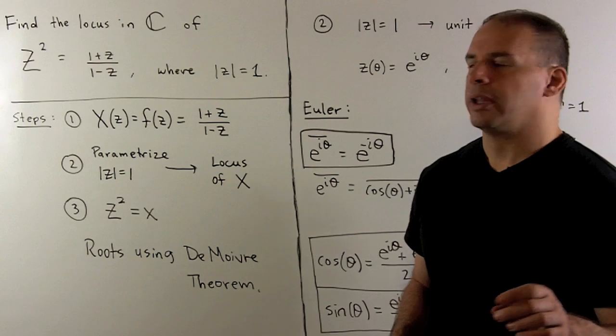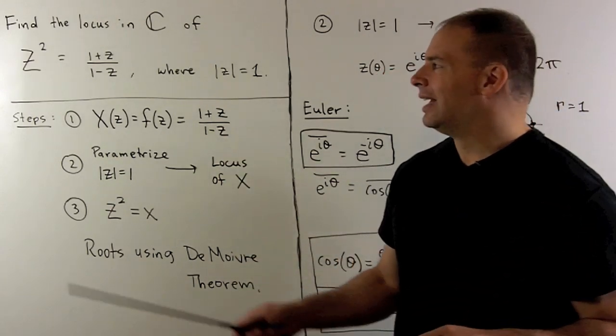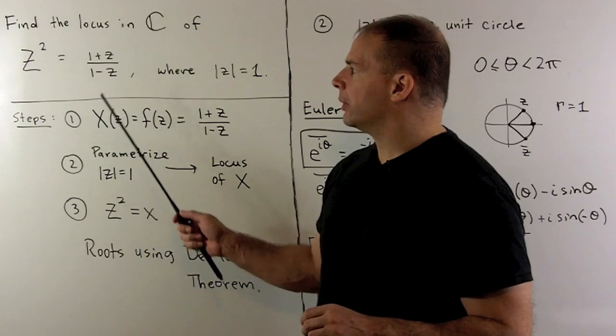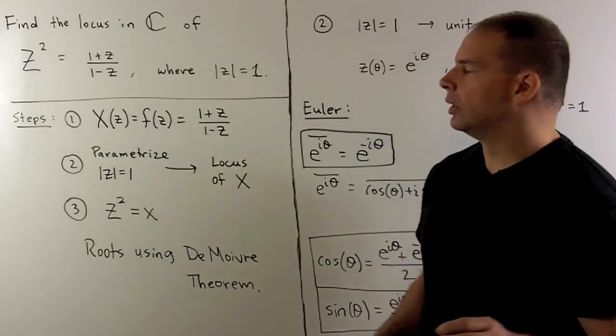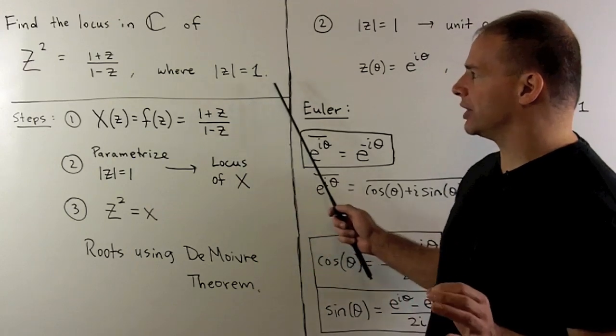Our problem is, find the locus in the complex plane of the equation capital Z squared equals 1 plus z over 1 minus z, where z ranges over all complex numbers with modulus equal to 1.